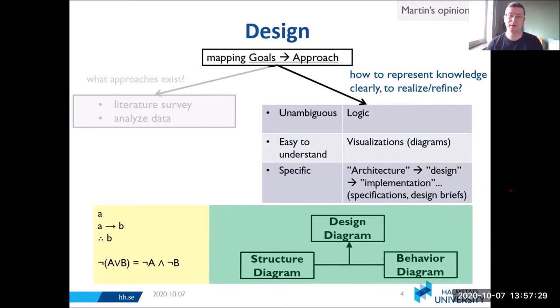To make it easy to understand, you can use visualizations and diagrams. To make your design specific, there tends to be a trend where we talk about things at a higher level first, then progressively go down into details. In your system architecture, which is a top-level way to look at things, you'll specify the structure and behavior of the main components and how they relate to one another. Then you describe each component or module, which can contain implementation details.